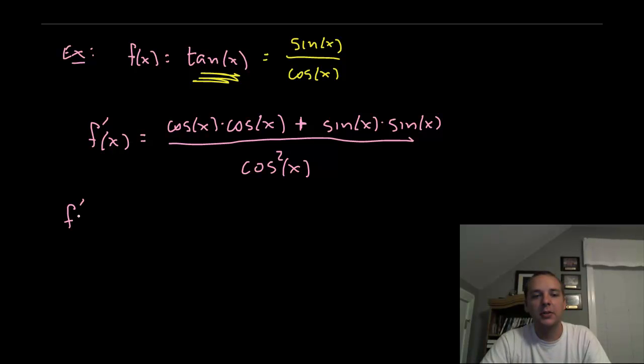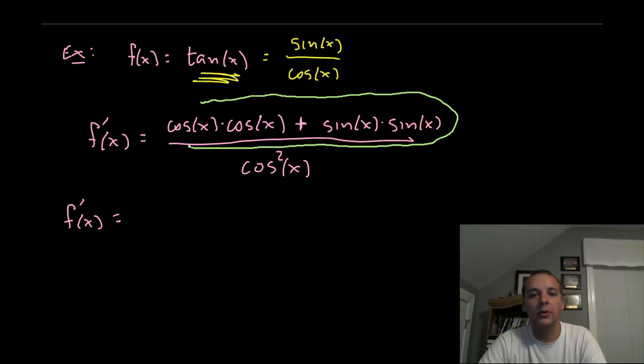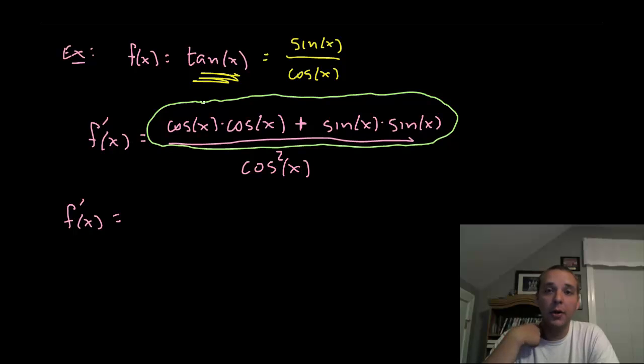Something that should jump out to us: we should all be fairly proficient at our trig identities. They help so much in calculus. If you had a pre-cal instructor that said trig identities are important or you can just use a cheat sheet, don't listen to that. It will hurt you when you take calc 1, 2, and 3. Go back and review your basic trig identities. They will really help you even though you're not explicitly tested on them.